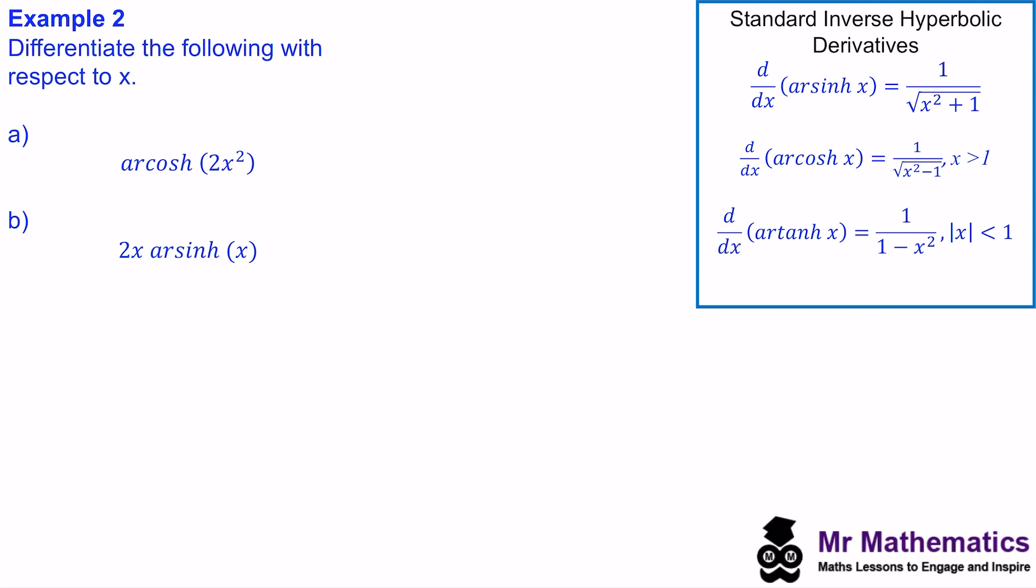For example 2, we're going to use the chain rule where we have the inner function and the outer function. So we need to say, let another variable, g, equal 2x squared. So to differentiate this, we need to work out d by dg of arcosh of g. And we need to multiply that by d by dx of 2x squared. So to work out the derivative of arcosh of g, we can replace this x with g. So we get 1 over the square root of g squared minus 1. And we'll multiply that by the derivative of 2x squared, which is 4x.